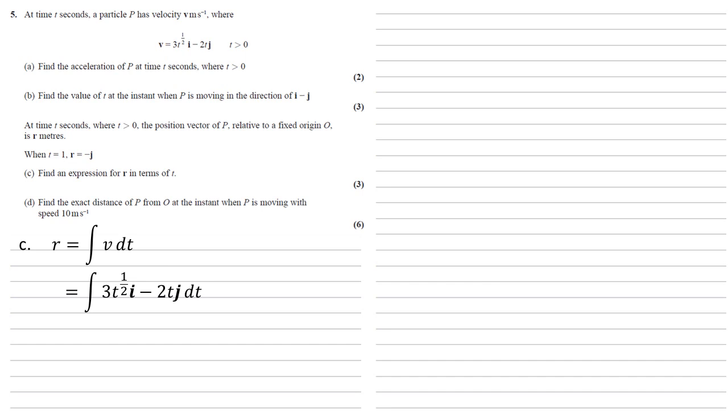So remember when integrating, we add 1 to the power and divide by the new power. So this becomes 2t to the power of 3 over 2 times i minus t squared j. This is an indefinite integral, so we've also got plus c on the end.